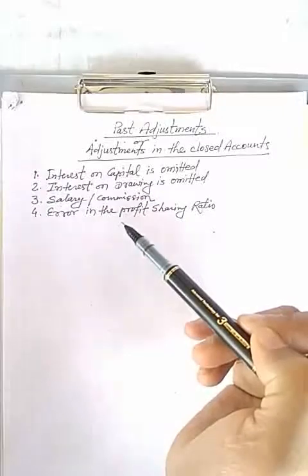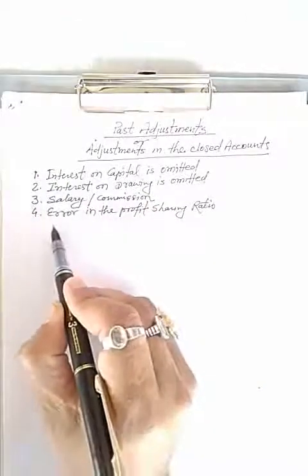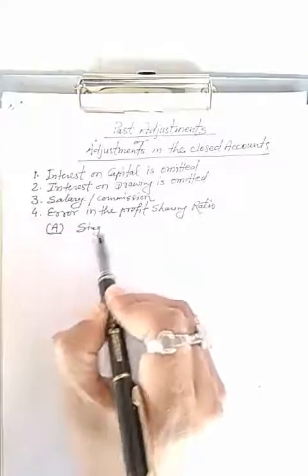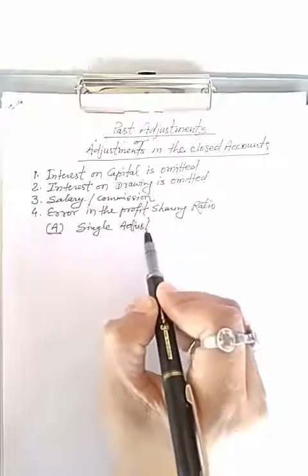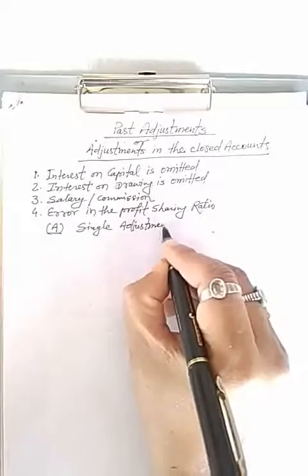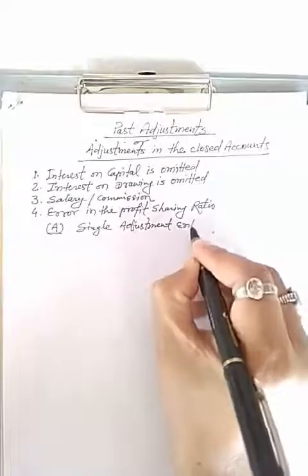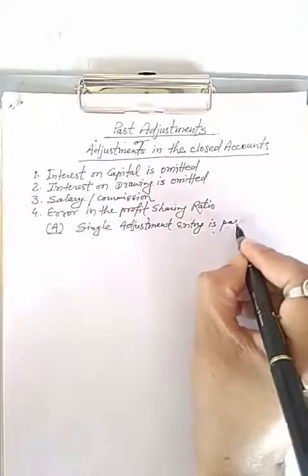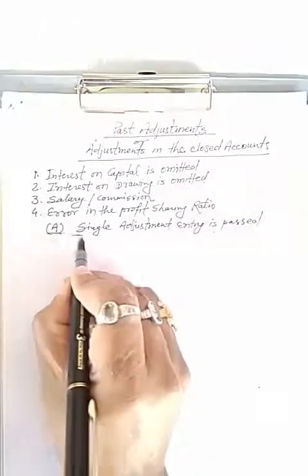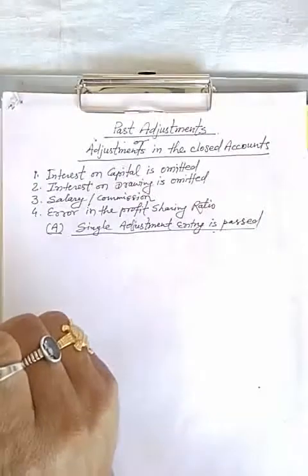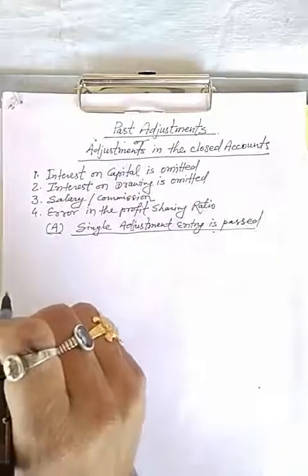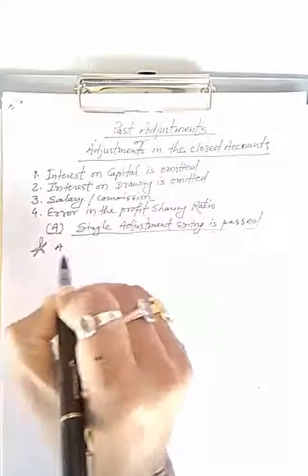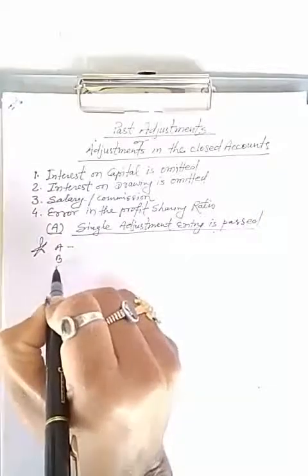There are two methods to rectify them. The first method is single adjustment entry. Suppose A, B, C are partners in a firm.